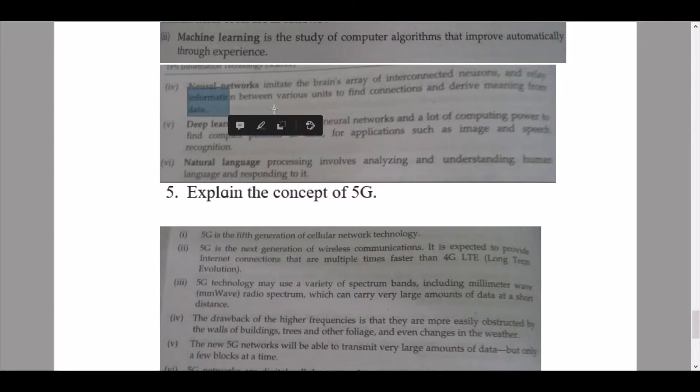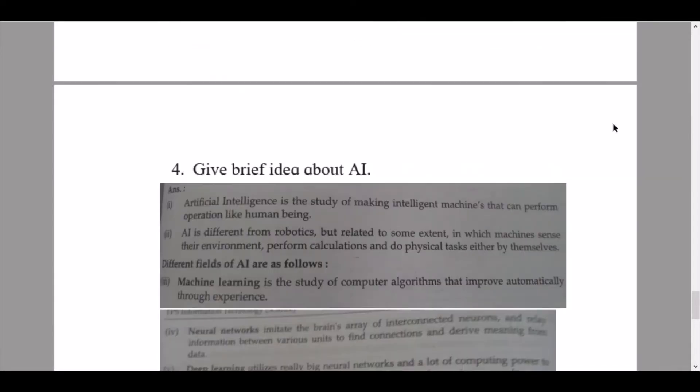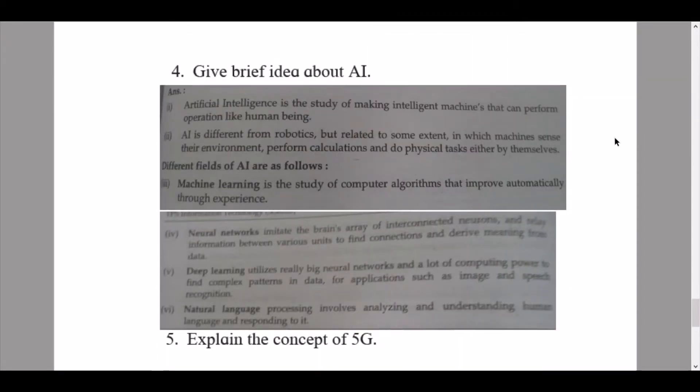Let's continue, we're going off topic. We were at point number four: neural networks. Neural networks imitate the brain's array of interconnected neurons and relay information between various units to find connections and derive meaning from data. Deep learning utilizes really big neural networks and a lot of computing power to find complex patterns in data for applications such as image and speech recognition. Natural language processing involves analyzing and understanding human language and responding to it.